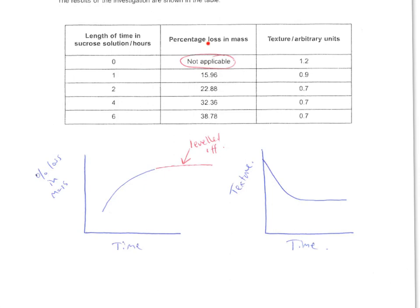One of the questions was, why did they include a result of not applicable? It's because there's not been enough time for osmosis to occur. This is the initial mass, so it's not lost any mass because it's the initial mass, you've just put the strawberry in the solution.